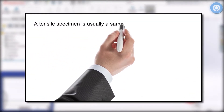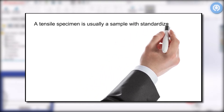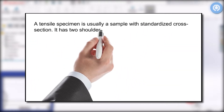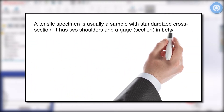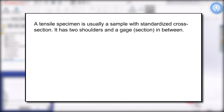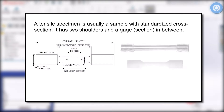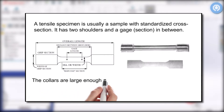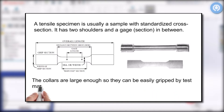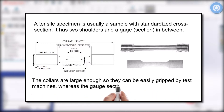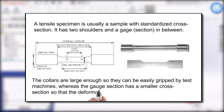A tensile specimen is usually a sample with standardized cross section. It has two shoulders and a gauge in between. The collars are large enough so they can be easily gripped by test machines, whereas the gauge section has a smaller cross section, so that the deformation and failure can occur in this area.